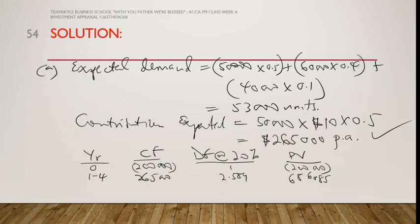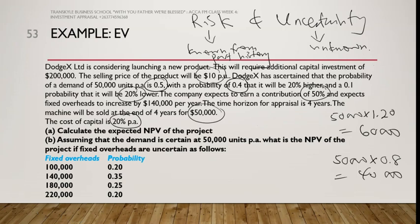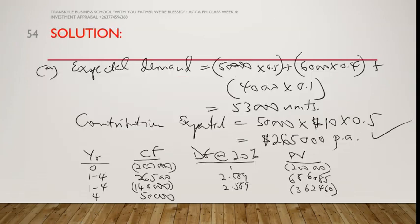We also incur additional fixed costs of $140,000 per annum, using the same annuity factor of 2.589, giving a present value of $362,460. Then there is a scrap value of $50,000 at year four, discounted at 0.482 from our PV tables, which comes to $24,100.